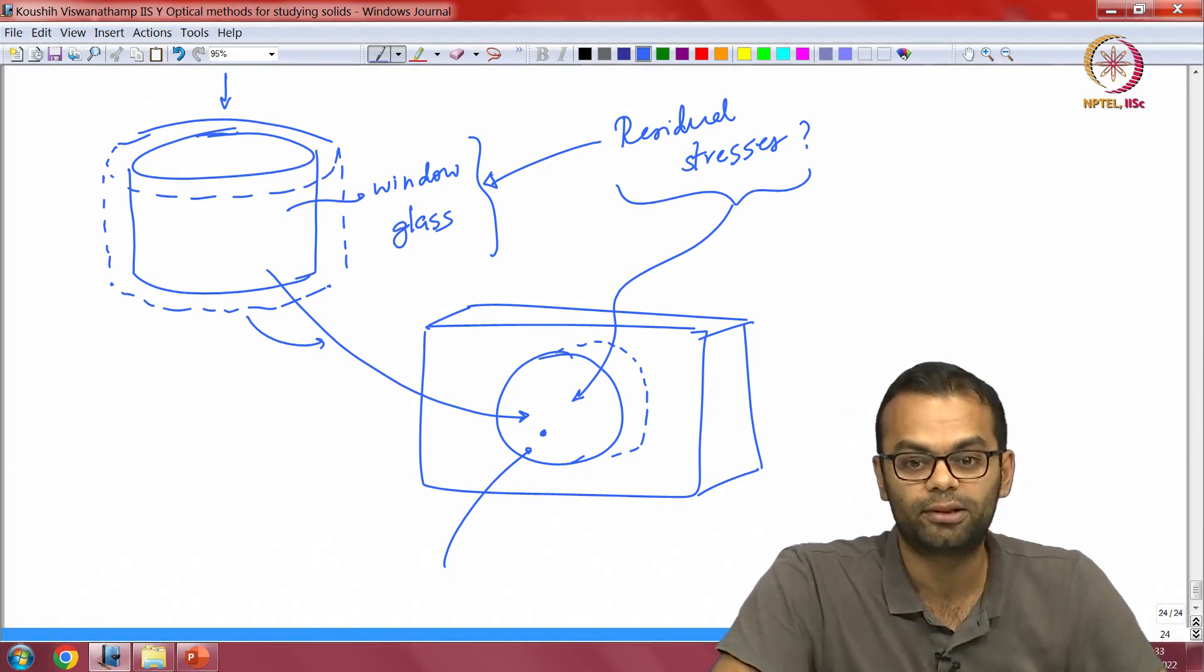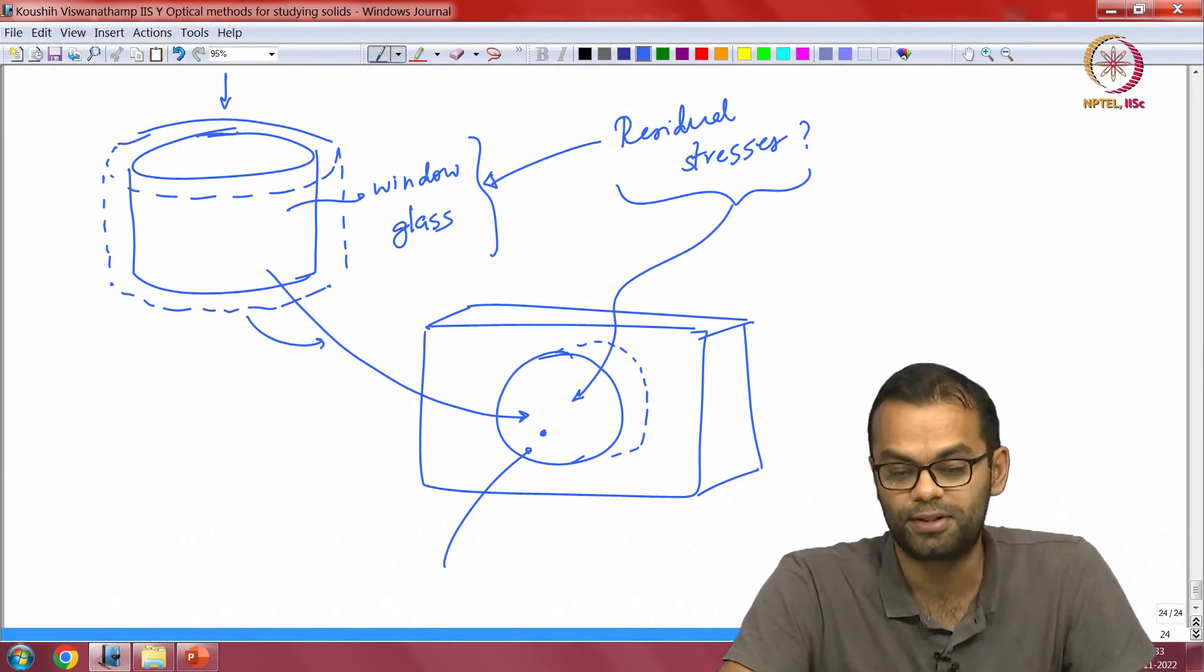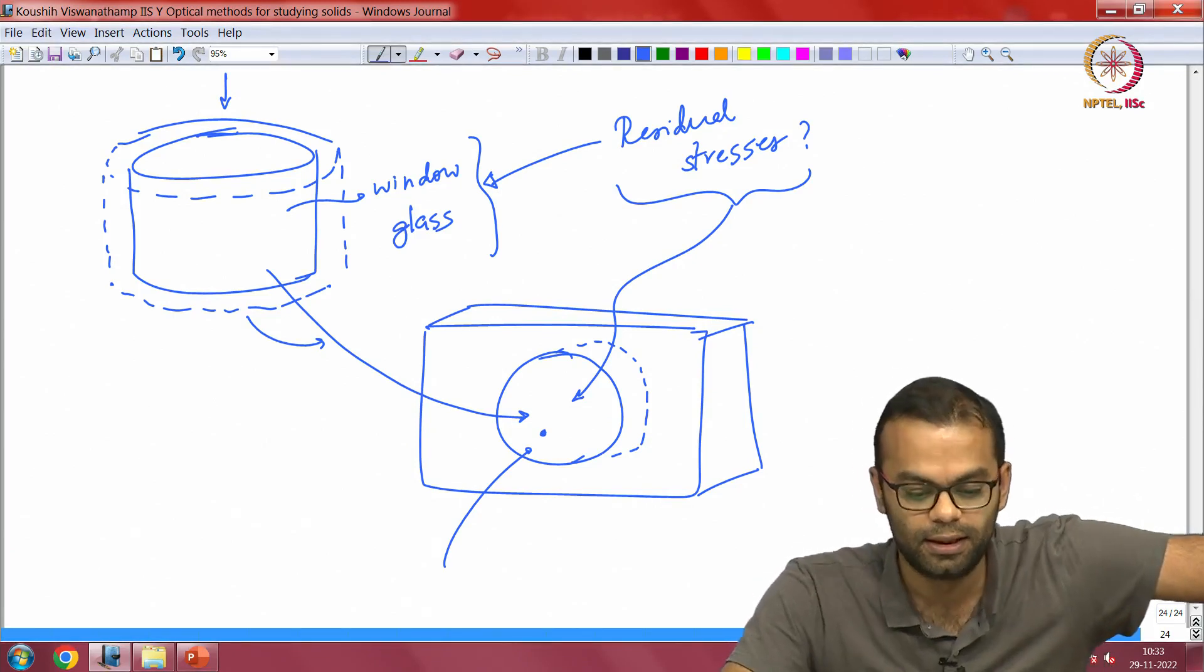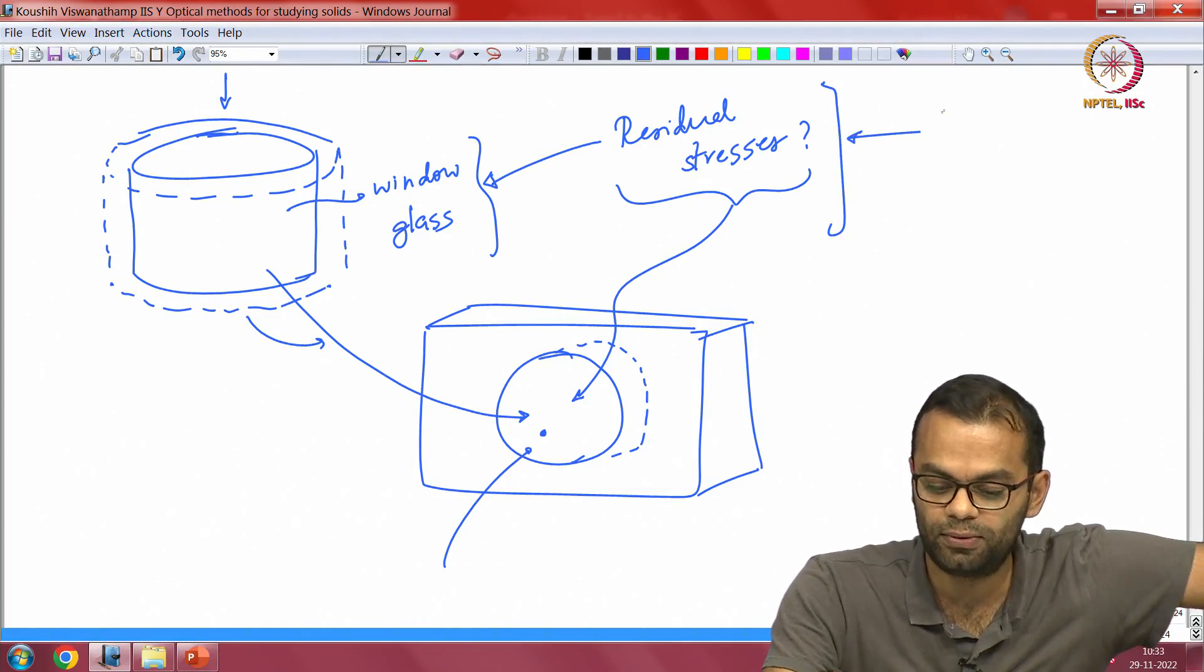Things like this are not easy to determine from strain fields, but relatively easy to determine from stress fields. That is why photoelasticity becomes important in a situation like this. Now, incidentally this is allied to the field of what is called tempering.